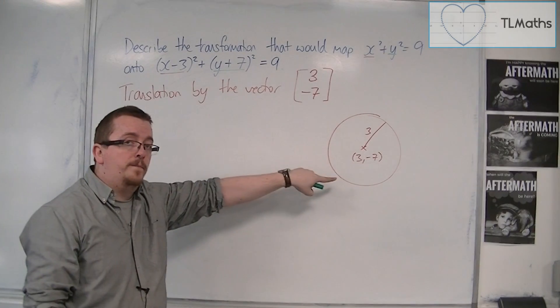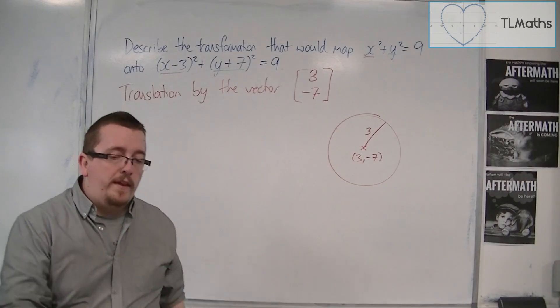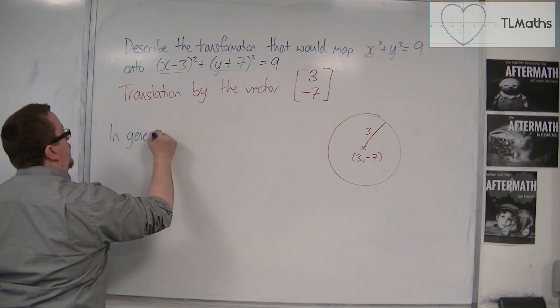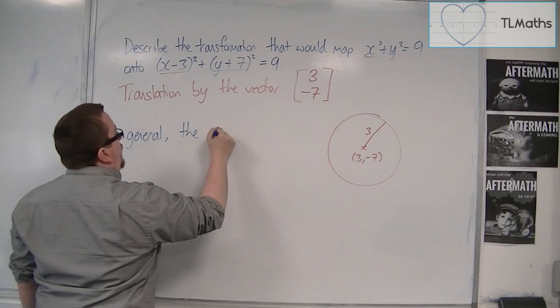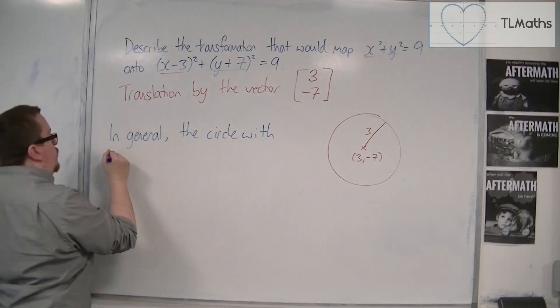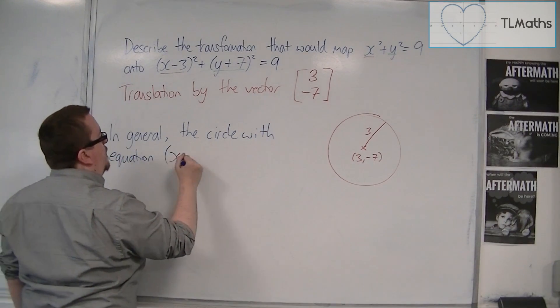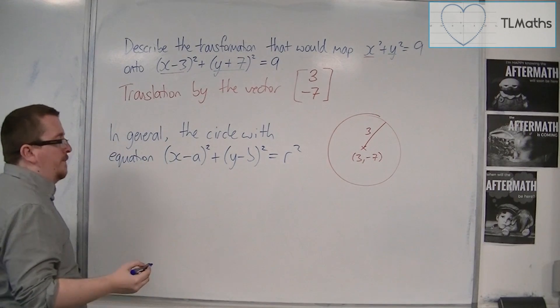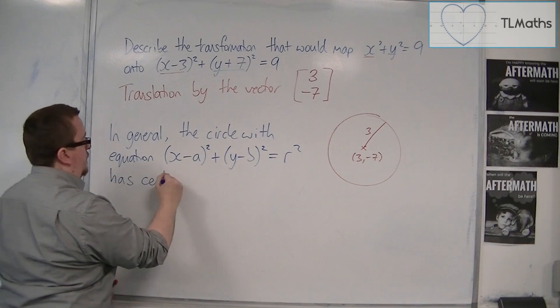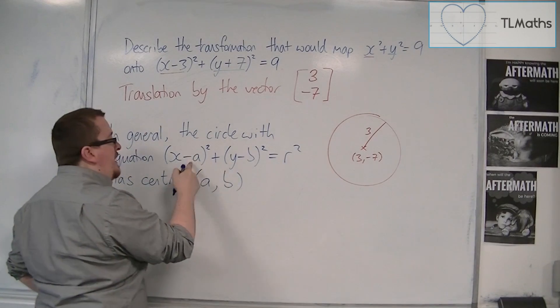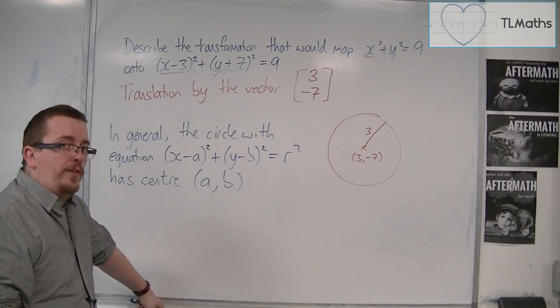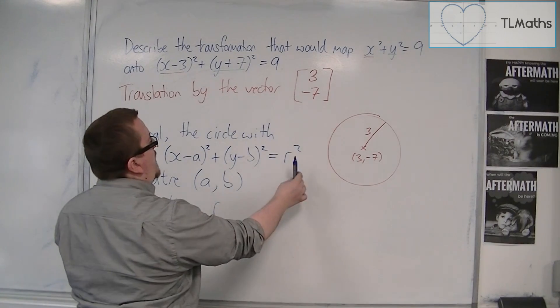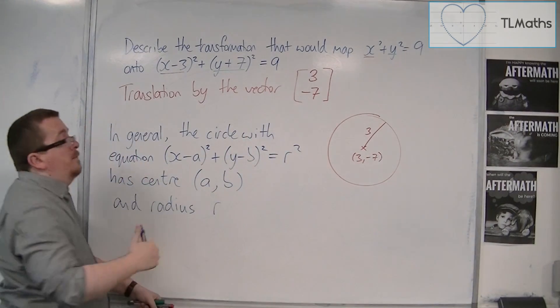This is what this circle would look like. So if we wanted to generalize this, so in general then, the circle with equation x minus a squared plus y minus b squared equals r squared has center (a, b), so these elements here identify the center of the circle and radius of length r. So the r squared in this case is 9, and so r must be 3.